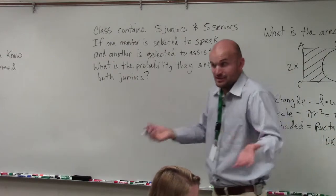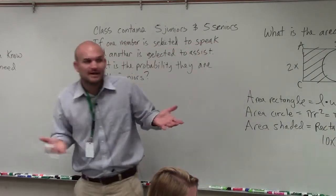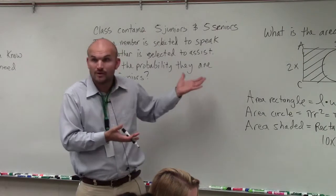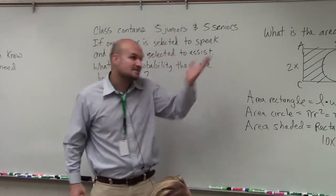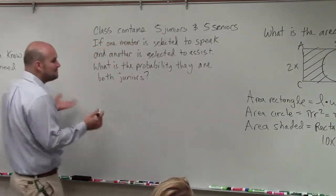So one thing you obviously know is you could say there's 10 people in the class, right? Even if you guys don't know if it's right or wrong, that is something you know. There's 10 total people. You could say there's five juniors and five seniors. There's 10 people in this class.